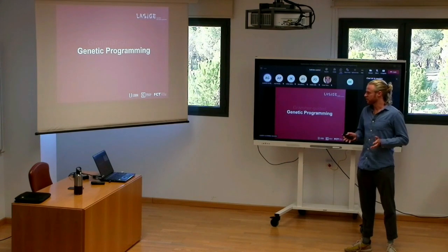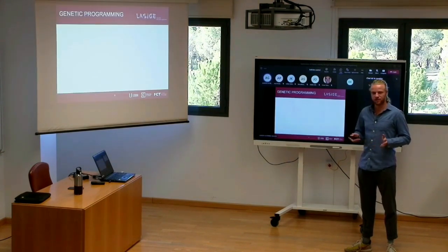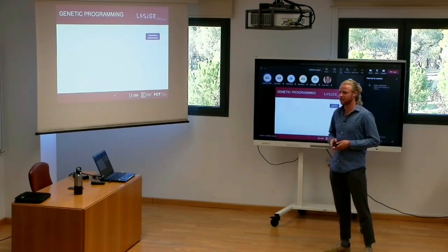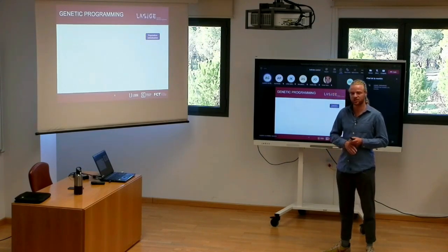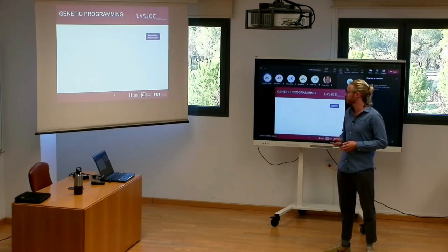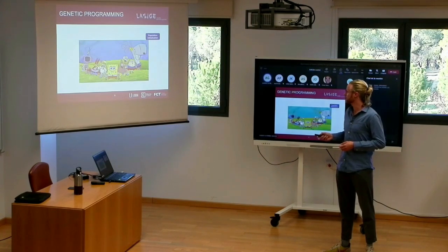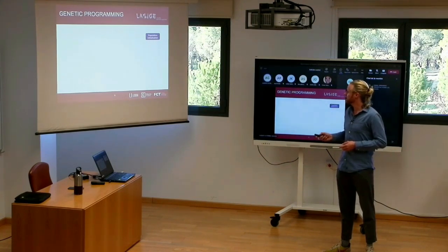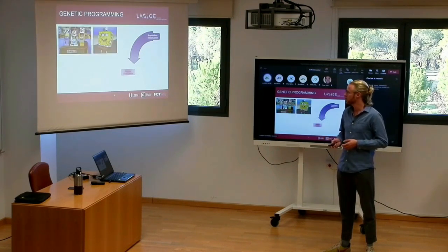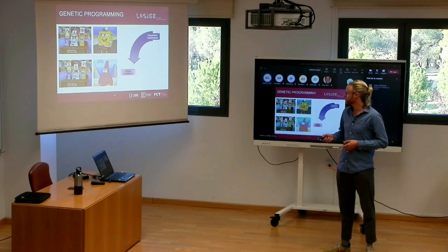Genetic Programming is a method that initialises programs and tries to evolve one that actually solves a certain problem. It starts by initialising a whole population of solutions — in this case we look at Spongebob individuals. Each individual is then evaluated to see how fit they are, how well they actually work. Some will work well and some will work poorly.